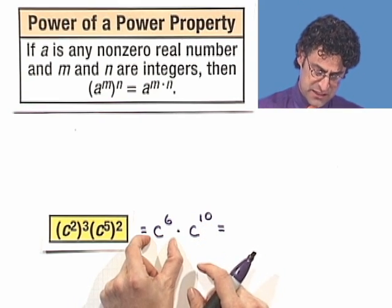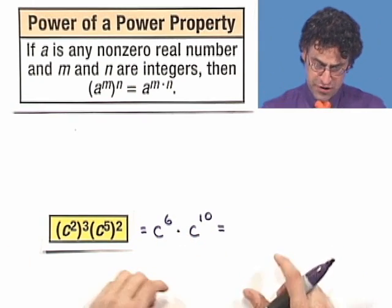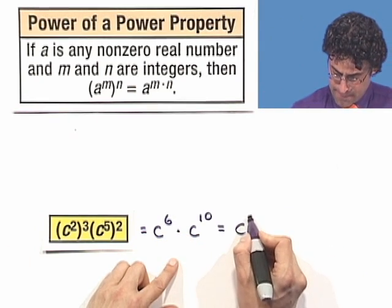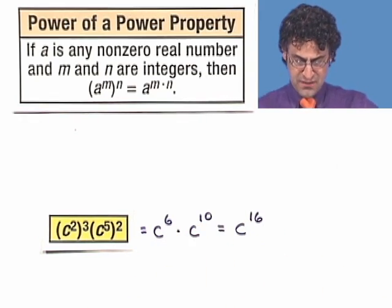I've got six factors of c here and I've got ten more factors of c here. All told, I have 16 factors. So I add the six and the ten and this simplifies down to c to the sixteenth. Pretty, pretty, pretty cool.